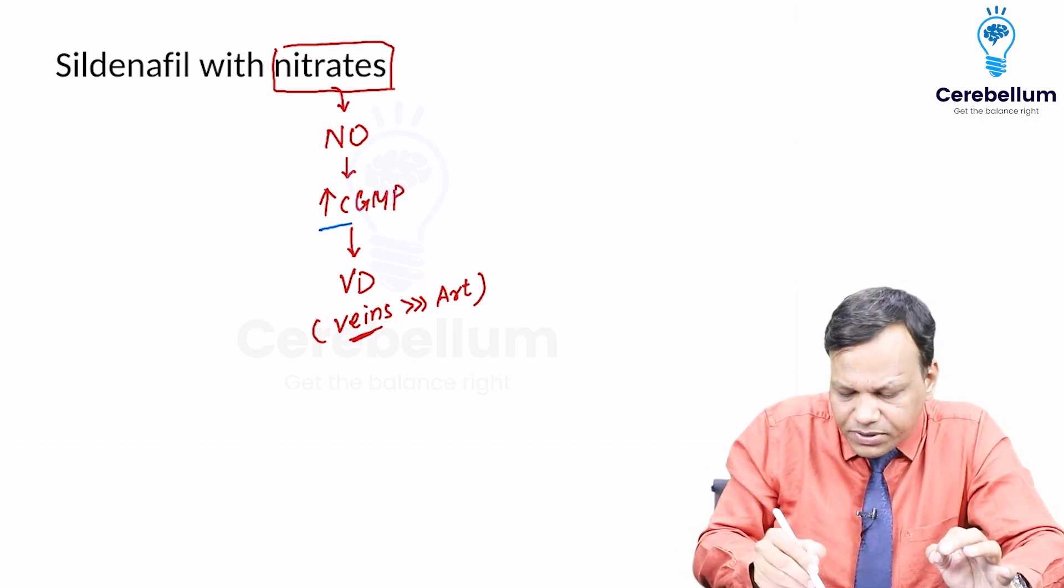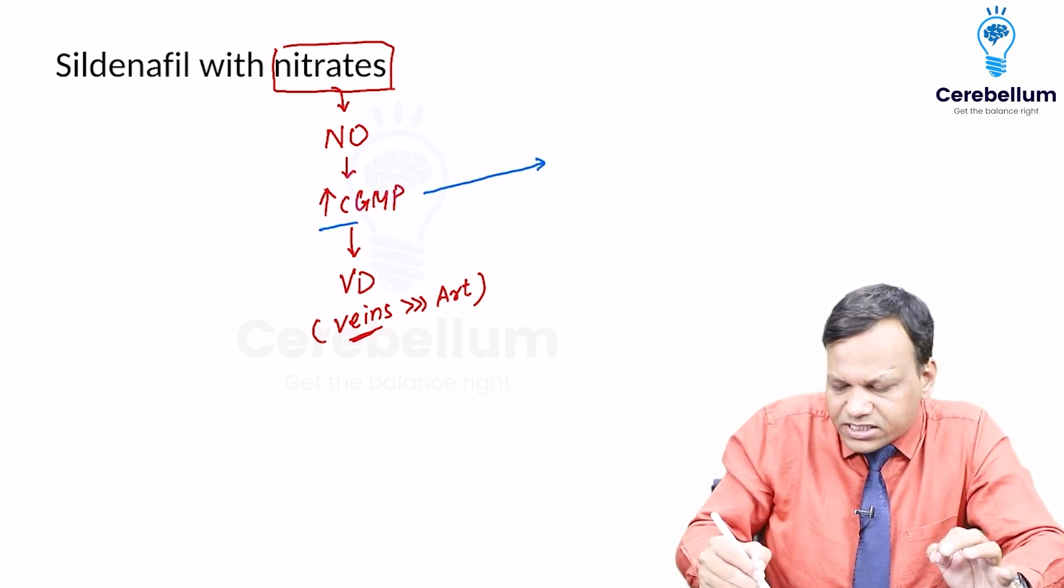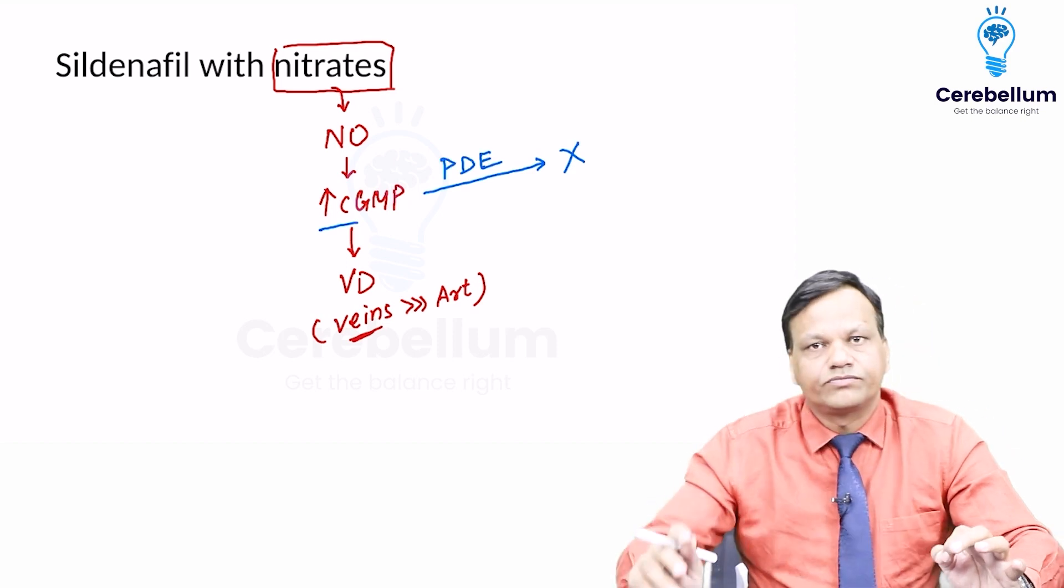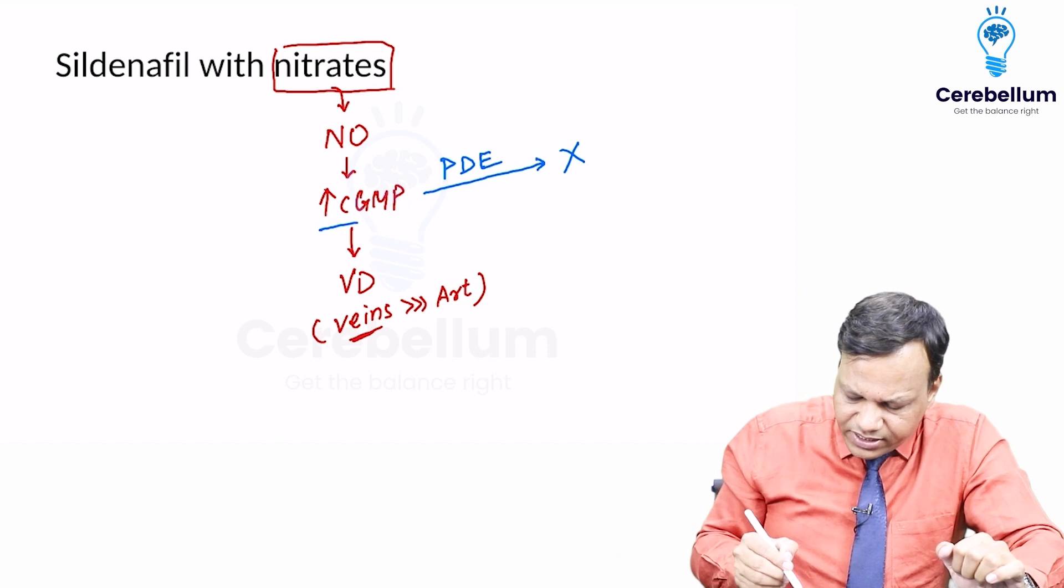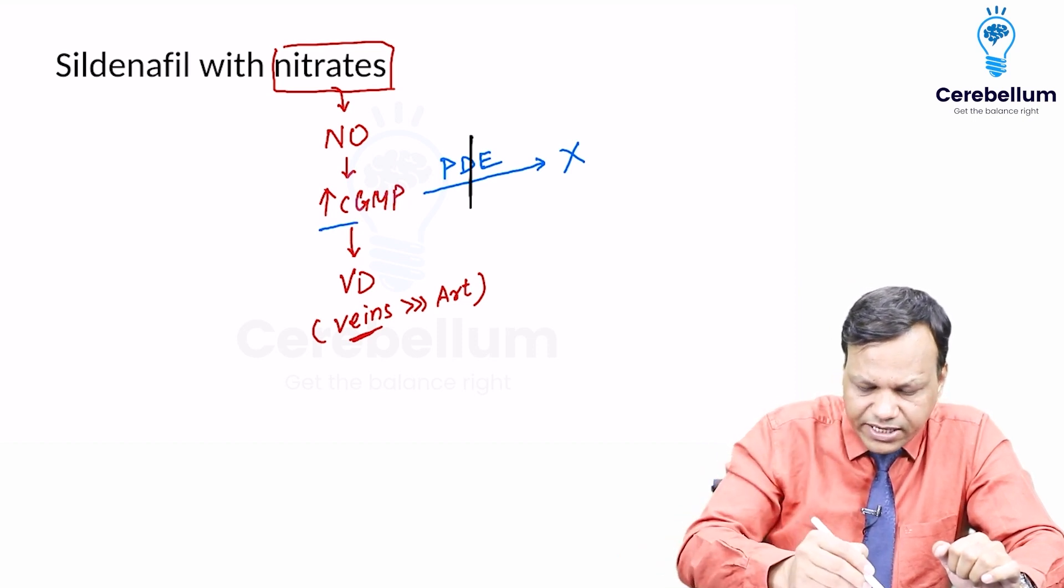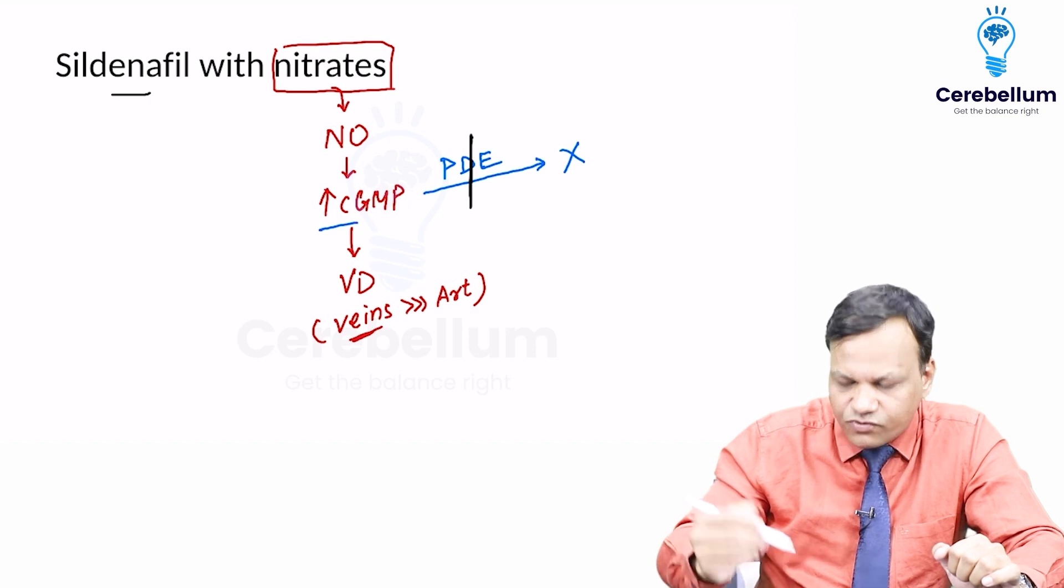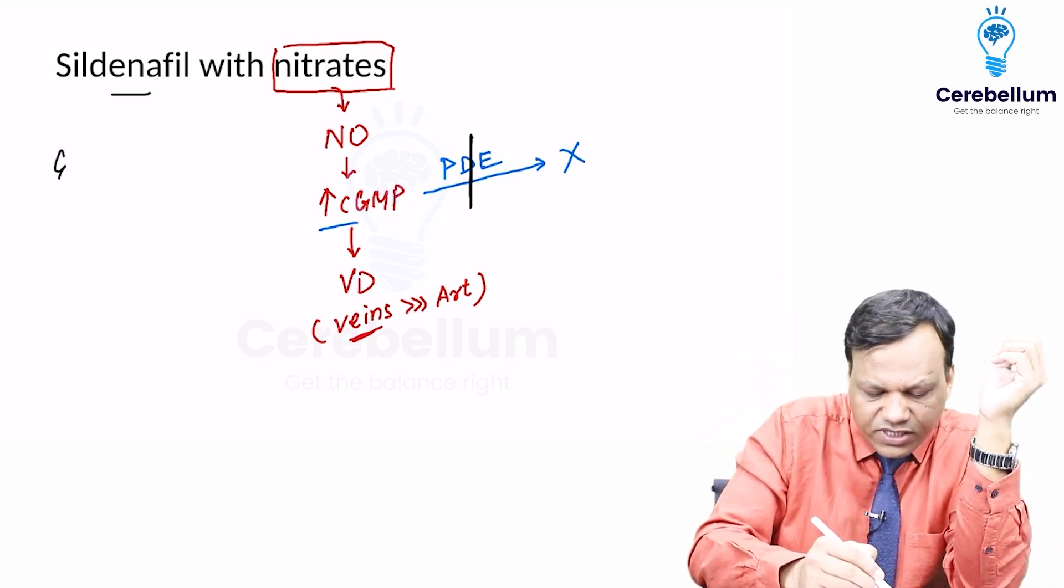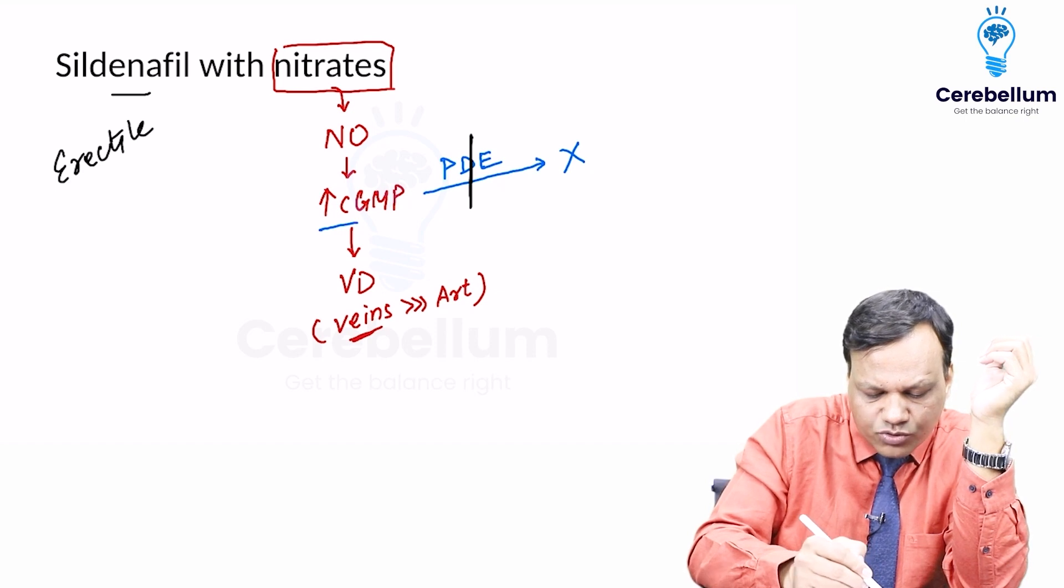After production, cyclic GMP is metabolized by an enzyme called phosphodiesterase. Sildenafil is a drug which inhibits phosphodiesterase. It is used in erectile dysfunction for impotence.